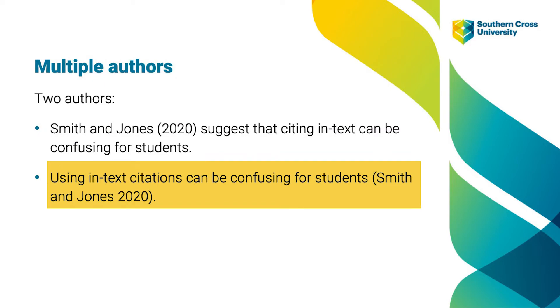The second example shows how to cite in text using an information-focused style when the work has two authors. Here we can see the first author's name followed by the word 'and' and then the second author's name, and then the year in round brackets.